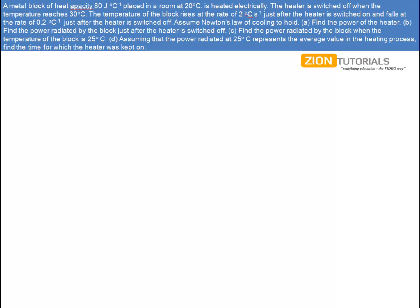A metal block of heat capacity 80 joules per degree Celsius is placed in a room at 20°C and heated electrically. The heater is switched off when the temperature reaches 30°C. The temperature of the block rises at the rate of 2°C per second just after the heater is switched on, and at 0.2°C per second just after it is switched off. Assuming Newton's law of cooling, find the power of the heater.